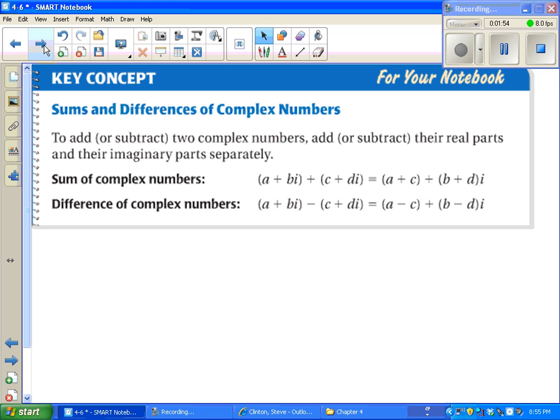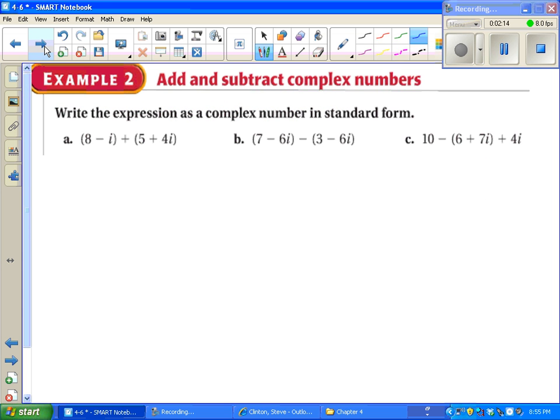Adding complex numbers, which means a number with an imaginary part, is just as easy as you'd want it to be. We add the real pieces, and we add the imaginary pieces. We're told to write the expression as a complex number in standard form. So I see 8 plus 5 is 13. Negative i, positive 4i. That means negative 1 and positive 4 makes 3i. Done.